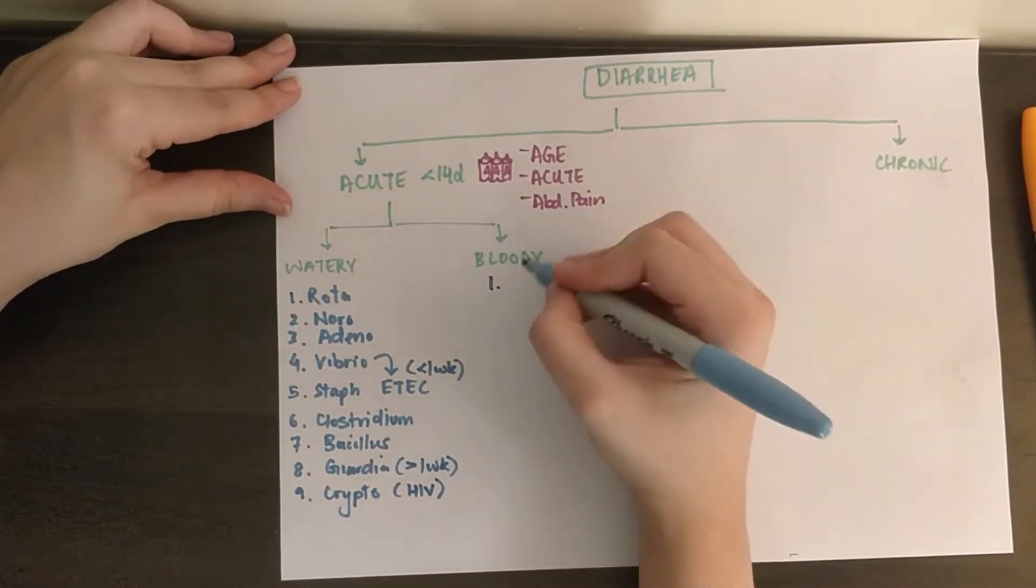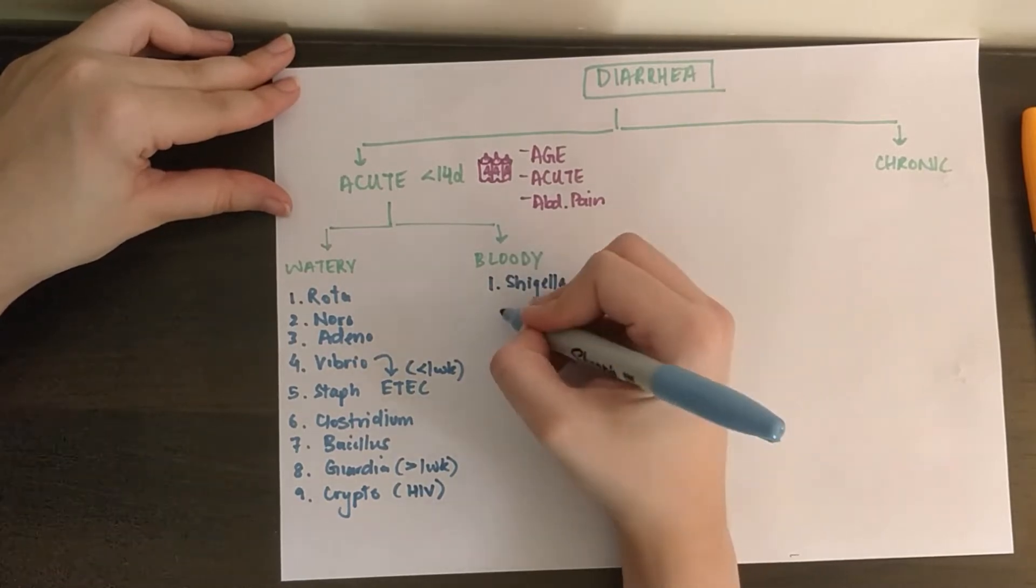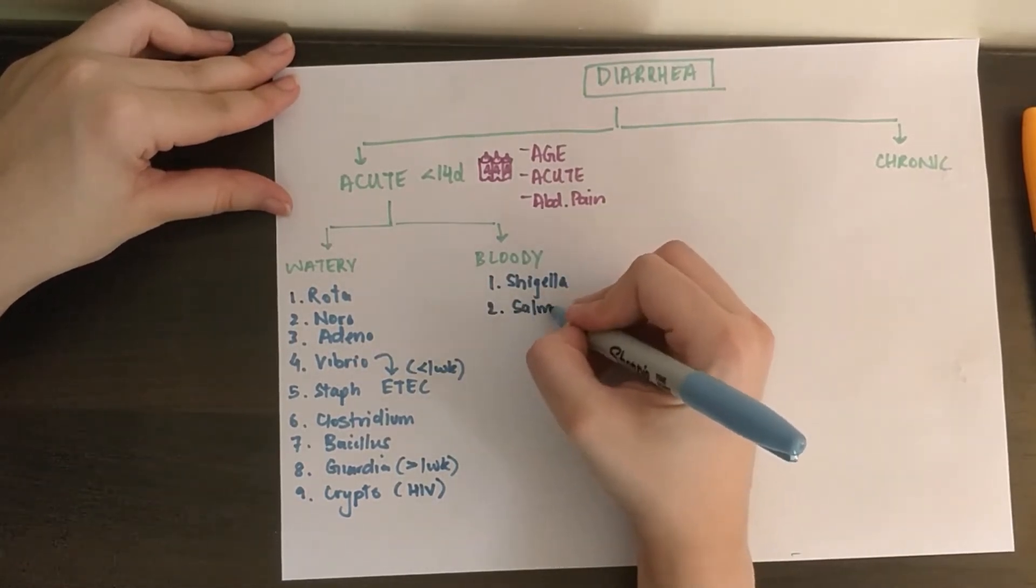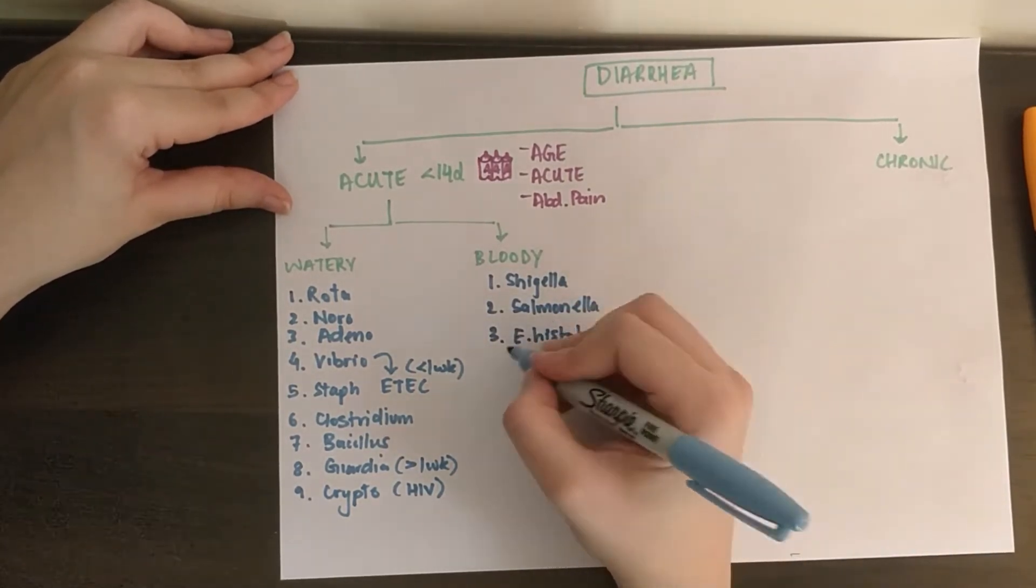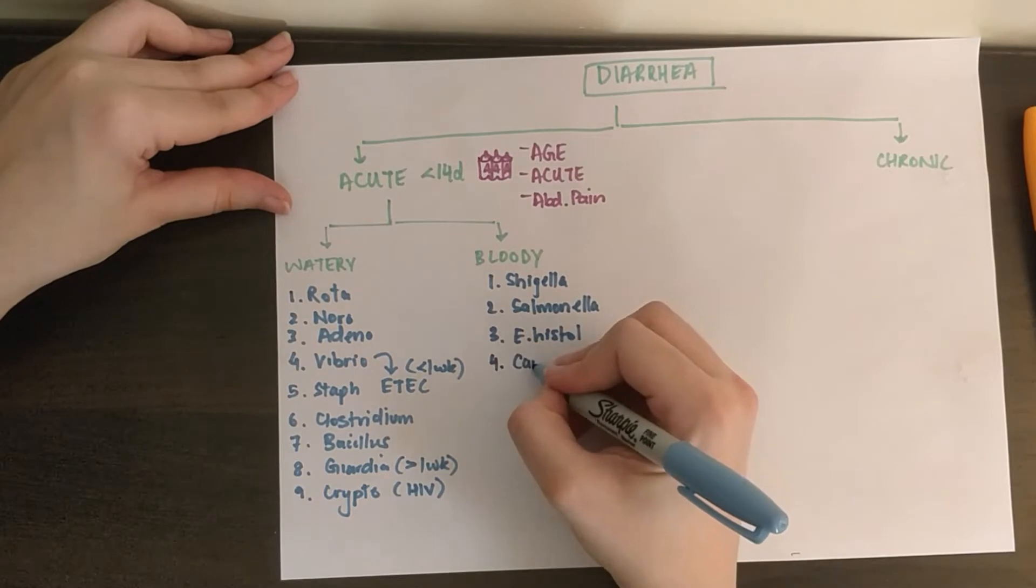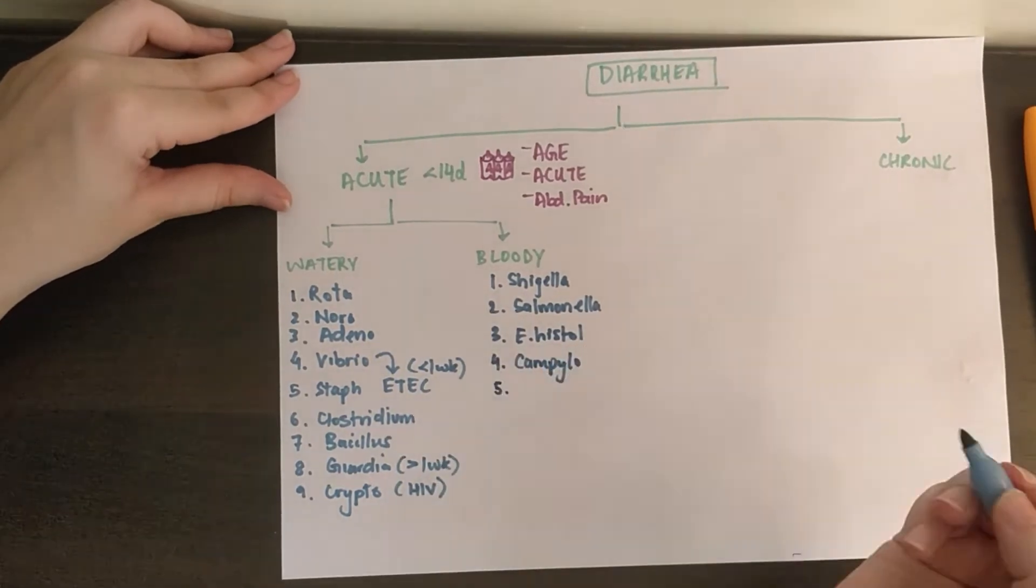Now moving on to bloody diarrhea. We have the usual suspects: Shigella, which doesn't produce H2S, Salmonella, which does, causing typhoid, enteric fever, Entamoeba histolytica, Campylobacter, and Yersinia, which causes pseudo-appendicitis.